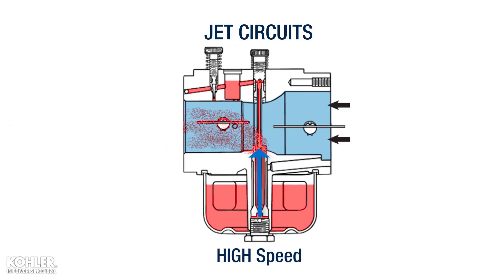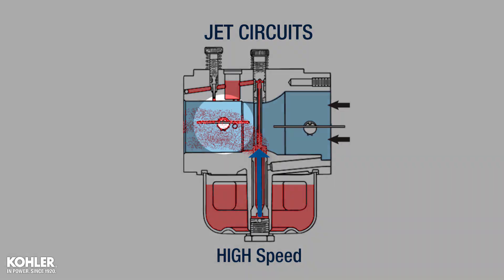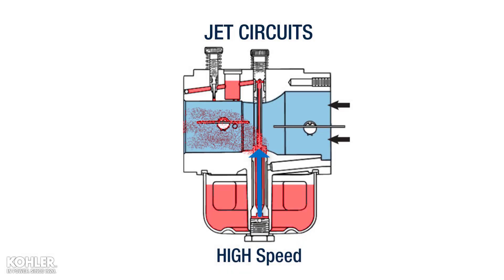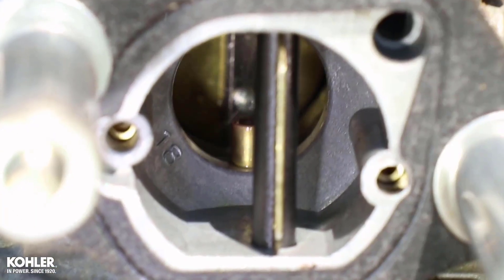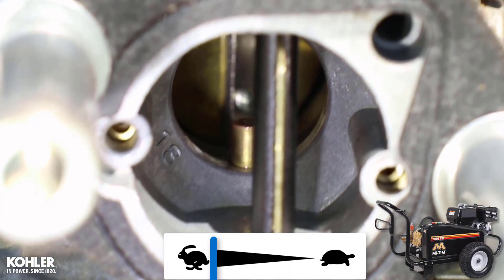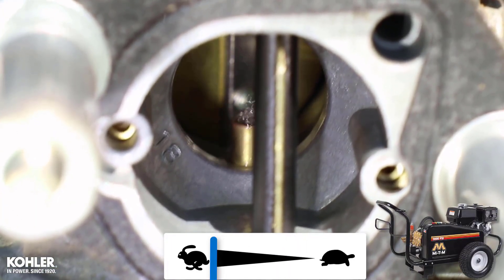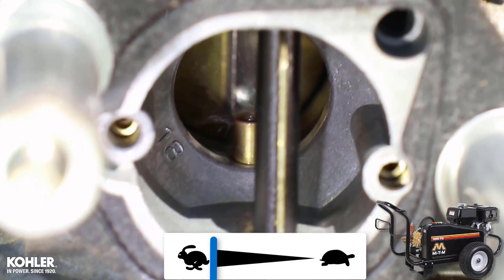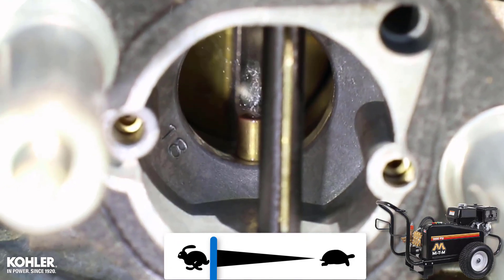This illustration of the high speed jet circuit implies the throttle plate is in the wide open position when the engine is running at high speed. This Kohler-powered pressure washer is running at the high speed setting, and the throttle plate is clearly visible as not wide open.